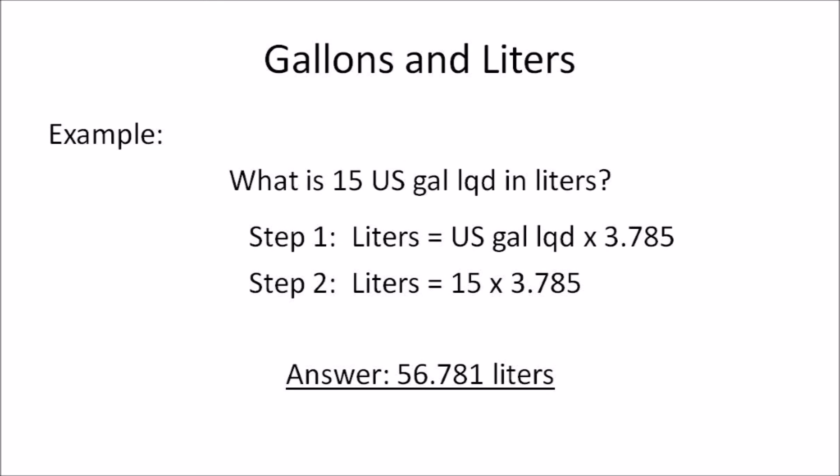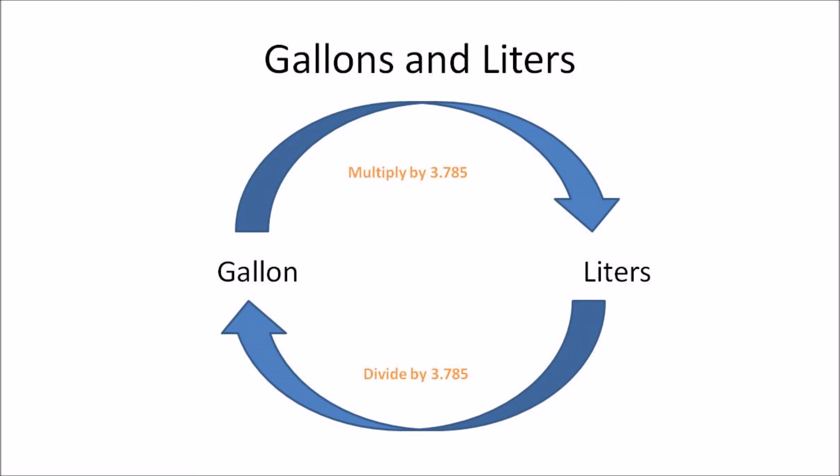Example two: what is 15 U.S. liquid gallons in liters? Now you're converting U.S. liquid gallons to liters. Step one, write the formula: liters is equal to U.S. liquid gallon multiplied by 3.785. Step two, substitute the amount into the formula: 15 multiplied by 3.785. The answer you get is 56.781 liters to 3 decimal places. That's how you convert gallons and liters using the conversion factor 3.785.